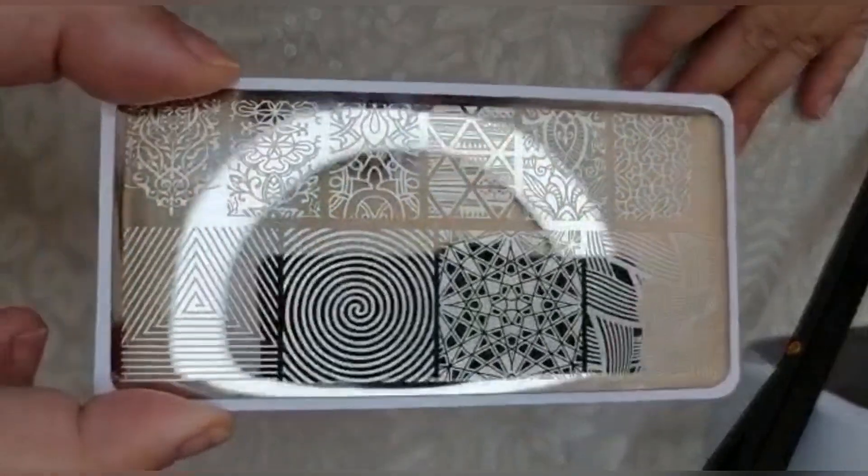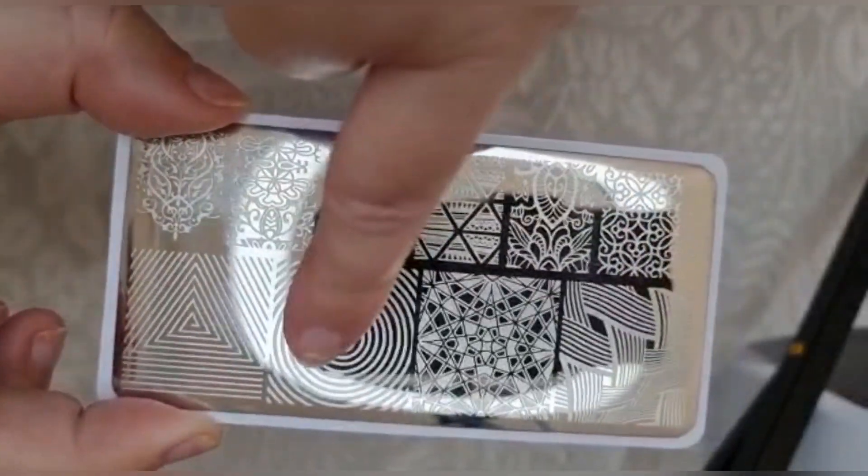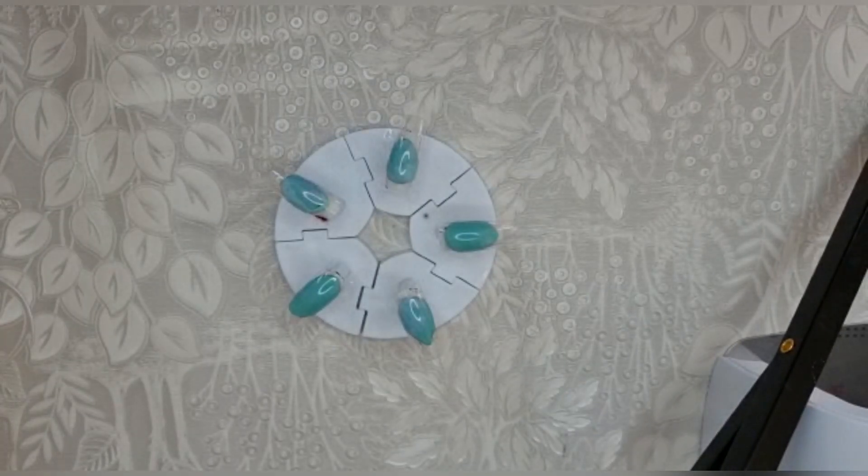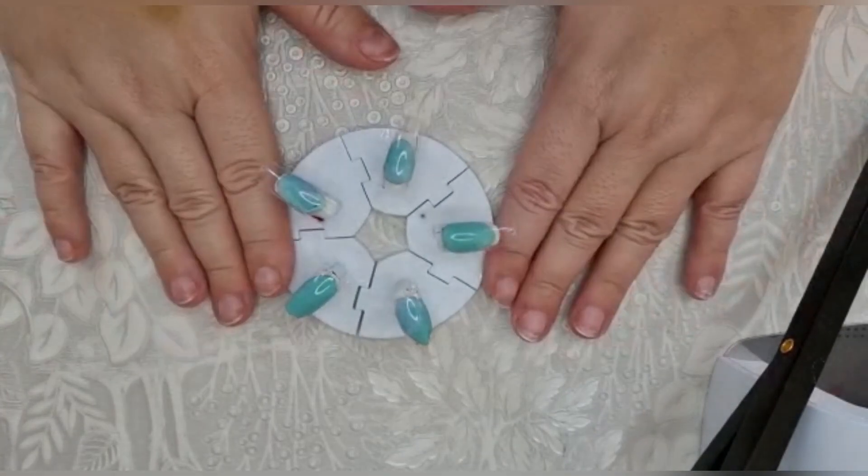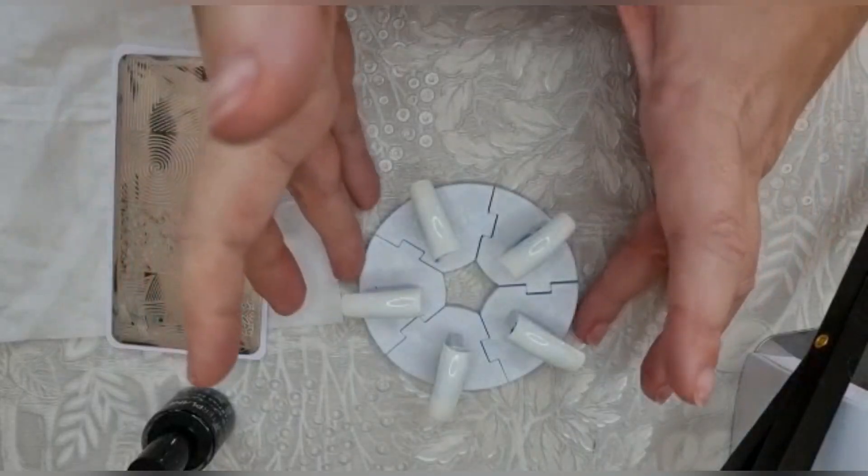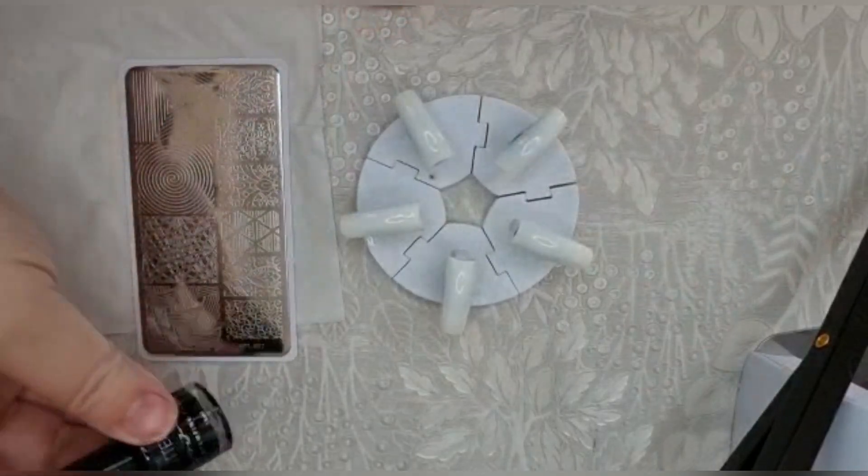I'm using this plate here and I'm going for these really cool looking designs - just a black and white set, so nice and simple. I'm going to do two coats of white on all of the tips to start with. Right, that's two coats and out of the lamp.